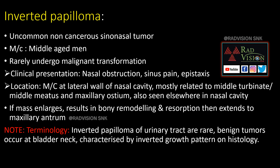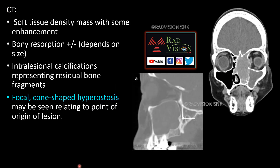For inverted papilloma, it is most commonly seen in middle-aged men. The most common location is at the lateral wall of the nasal cavity related to the middle turbinate, middle meatus, and maxillary ostium. On CT, soft tissue density mass with some enhancement is seen. Bony resorption may or may not be seen depending on the size. Notably, focal cone-shaped hyperostosis is seen, which marks the point of origin of the lesion.